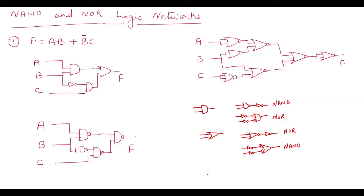One more important thing: how to replace an inverter using NAND or NOR gates. For a NAND gate, we short the two input legs together. If we give input 1, both inputs are 1 — NAND gives 0. If we give 0, both inputs are 0 — NAND gives 1. So it behaves as an inverter. The same approach works for NOR: short the two inputs, and it also acts as an inverter.